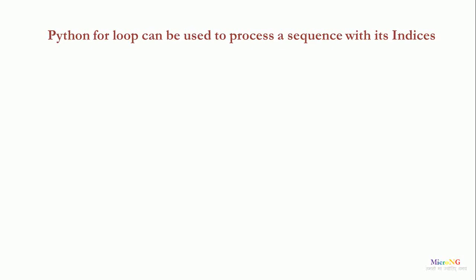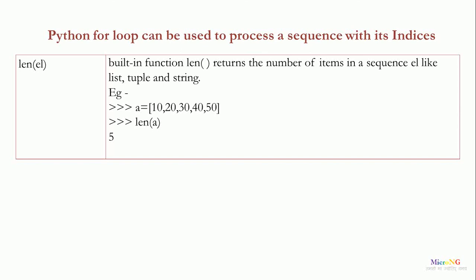The Python for loop can also be used to process a sequence like a list or a tuple using its indices. The index of a sequence can be accessed using range. If el is a sequence, the built-in function len(el) returns the number of items in the sequence. For example, for a list a which consists of elements 10 to 50, len(a) returns 5 since there are five elements.